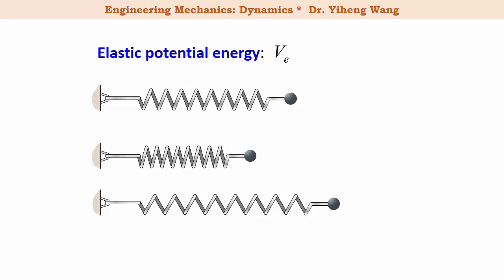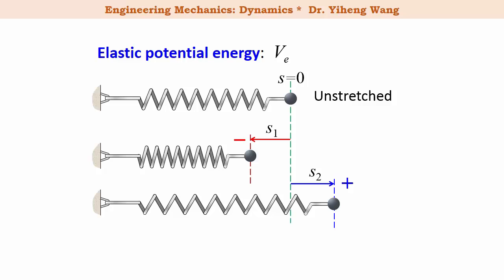The elastic potential energy VE is defined to describe the ability of a spring force to do work to an object attached to the spring. Unlike the gravitational potential energy, the datum for the elastic potential energy is not randomly chosen — it is always chosen to be the position when the spring is unstretched. Therefore when the spring is compressed the displacement is negative, and when stretched it is positive. However, the potential energy is always calculated as one-half k s squared, so it is always non-negative. This is because the spring always tries to restore its original shape and length, so whether compressed or stretched, it will always do work to return to its unstretched position.